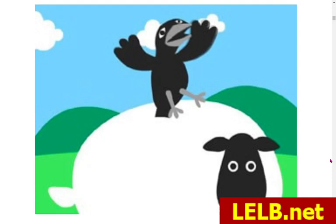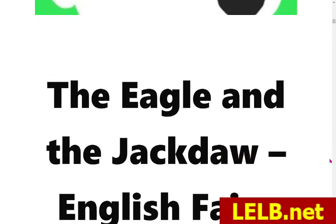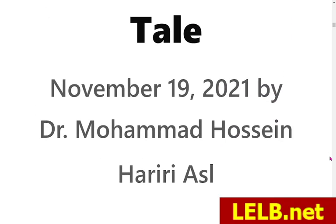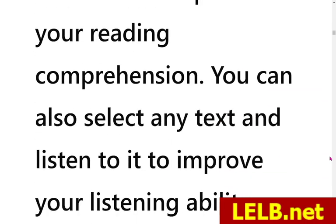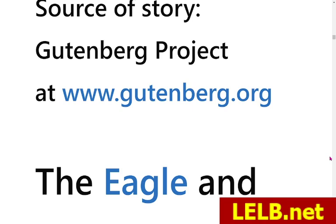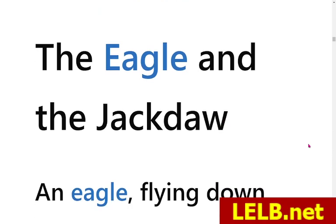Hello everybody and welcome back to another episode of our tutorials at A Little Bit Society. This time I'm going to tell you a story from Aesop with the title 'The Eagle and the Jackdaw.' You are probably going to learn some vocabulary in this story. The text has been adopted from the Gutenberg Project at gutenberg.org, which falls into the category of free materials in the public library — you can use the material without infringing copyright laws.